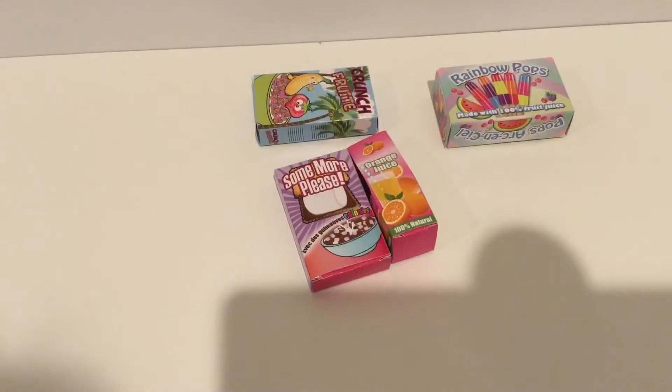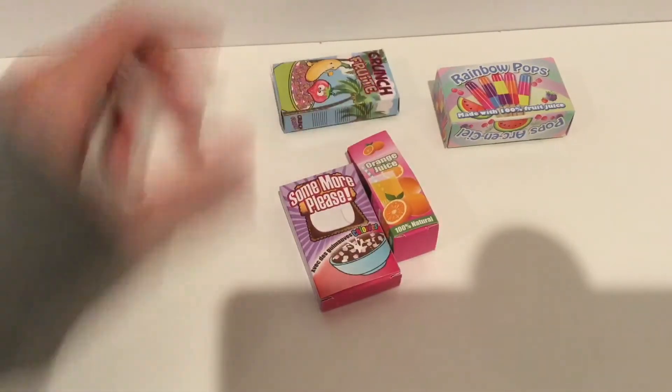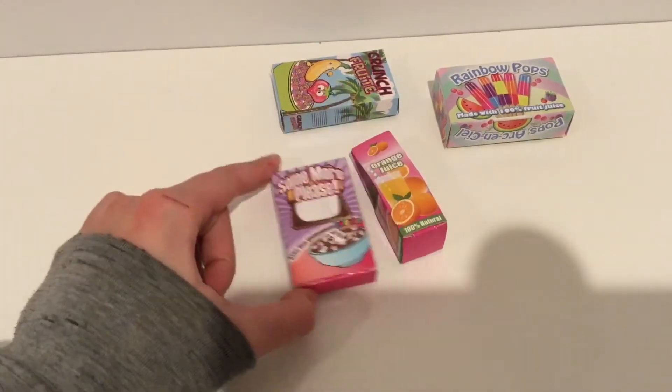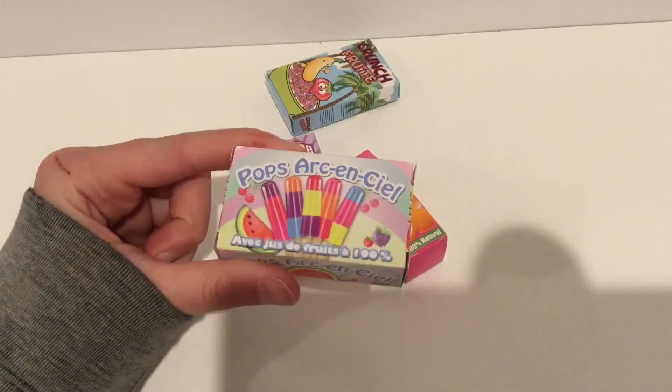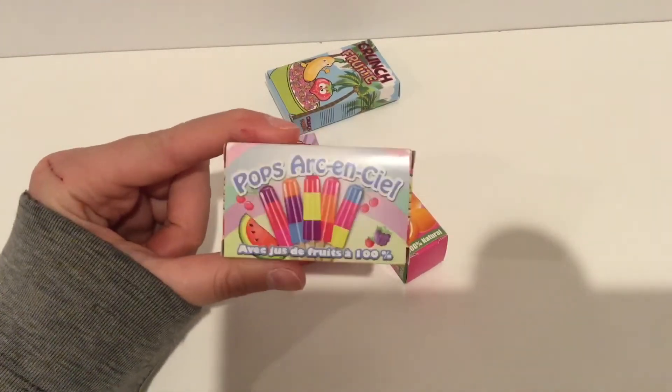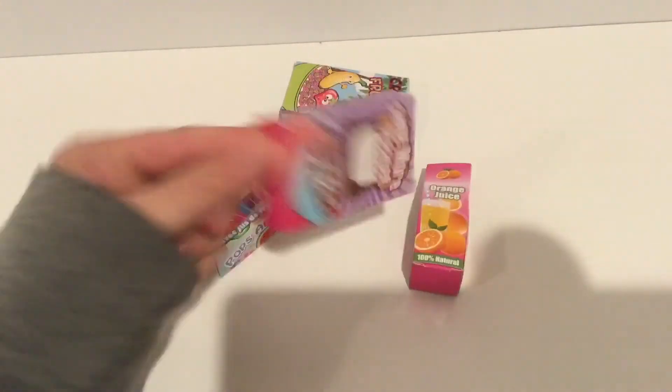All this stuff is made out of just paper, there's nothing inside it. So we have Crunch Fruity cereal, we have some more Please S'mores cereal, and then we have orange juice and rainbow pops. And the cool thing about these and everything in the set is I think on the back that's maybe French, I'm not exactly sure. But it says French on the back of all the packages, so that's a pretty cool detail.